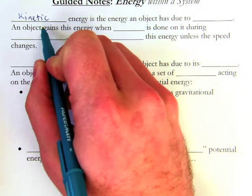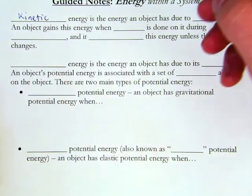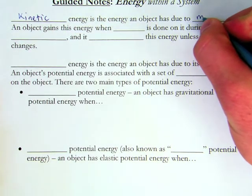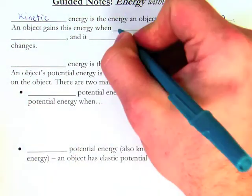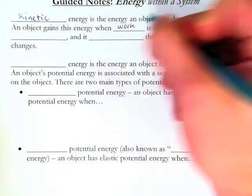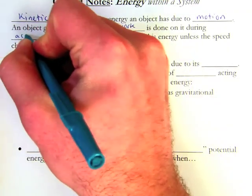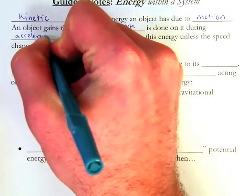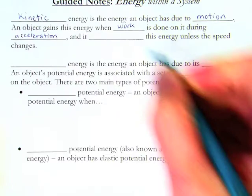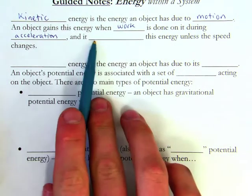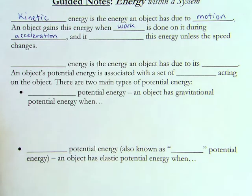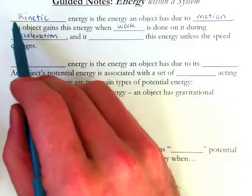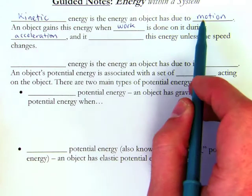First we have kinetic. Kinetic energy is the energy an object has due to motion. An object gains this energy when work is done on it during acceleration. So whenever an object accelerates, an object experiences an increase in kinetic energy because kinetic energy is the energy an object has due to motion.